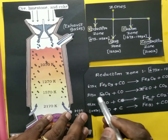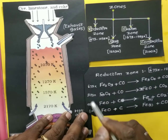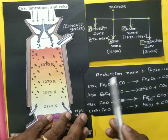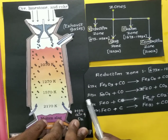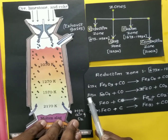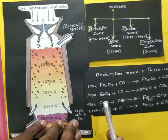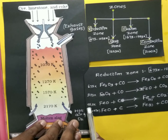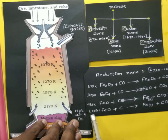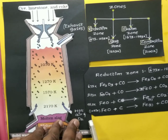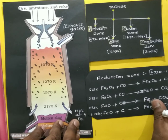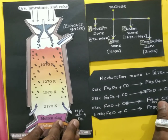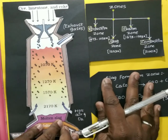Various temperatures exist in the reduction zone: the first reaction takes place at 673 K, the second at 873 K, the third at 973 K, and the fourth at 1073 Kelvin. This is the reduction zone and the type of reactions taking place within it.